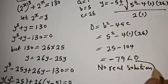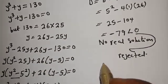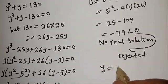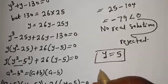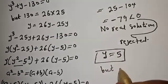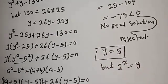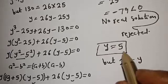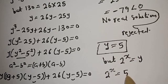And all of this second case is rejected. The only solution we have is y is equal to 5. But 2 raised to power s is equal to y. When y is equal to 5, 2 raised to power s is equal to 5.